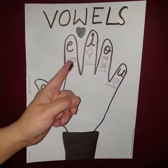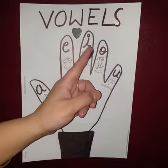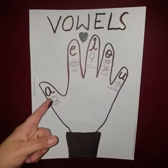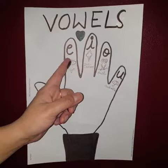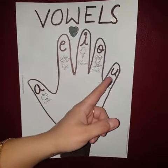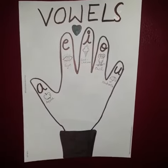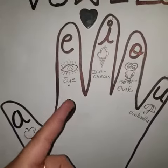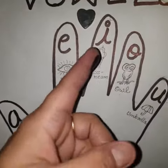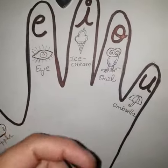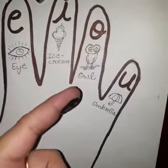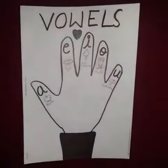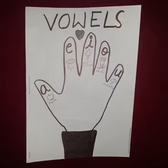A, E, I, O, U. Once again: A, E, I, O, U. A for apple, E for eye, I for ice cream, O for owl, U for umbrella.